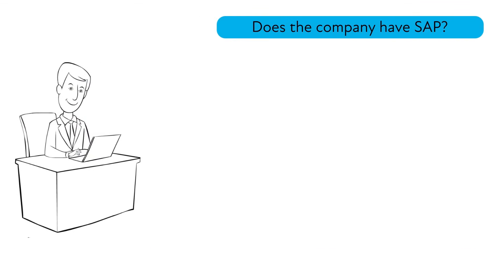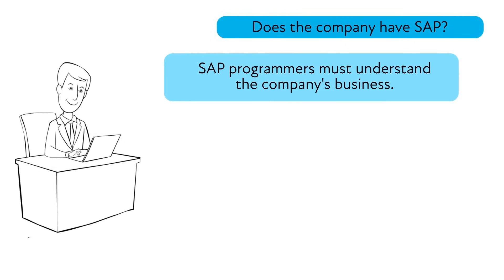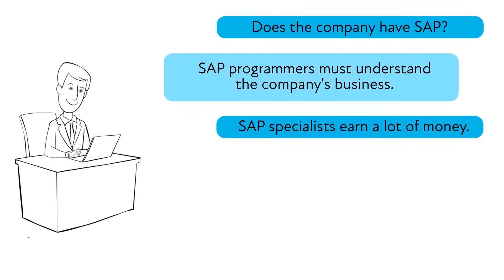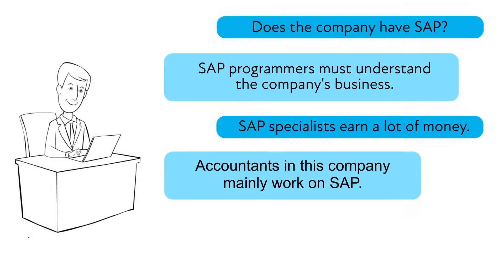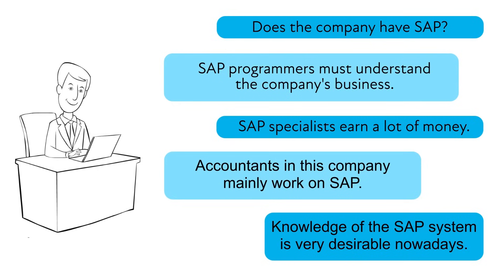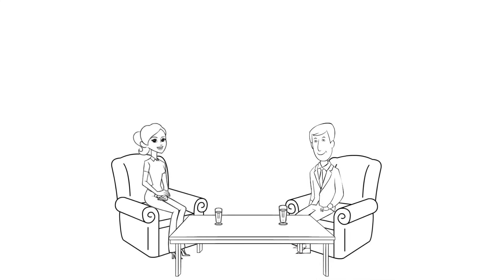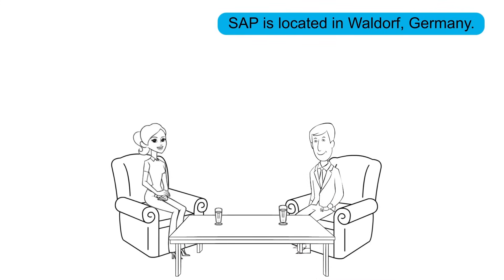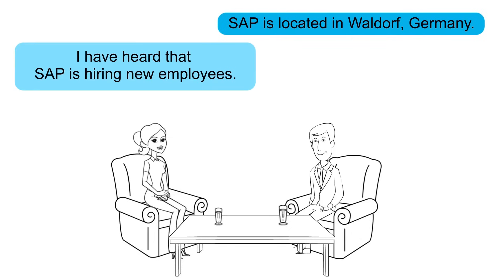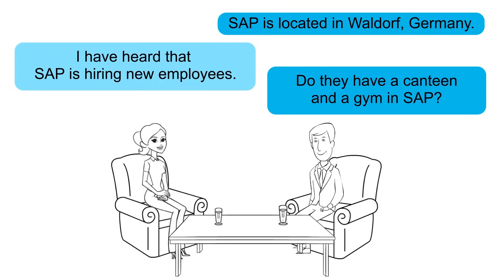So if someone says, 'Does the company have SAP? SAP programmers must understand the company's business. SAP specialists earn a lot of money. Accountants in this company mainly work on SAP. Knowledge of SAP system is very desirable nowadays.' In that case, they most likely mean the SAP software. But if someone says, 'SAP is located in Waldorf, Germany. You have heard that SAP is hiring new employees. Do they have a canteen and a gym in SAP?' — they mean the SAP company.